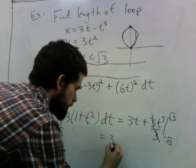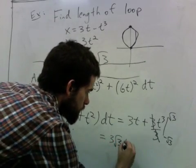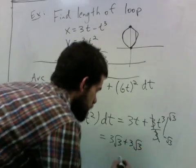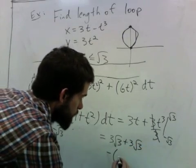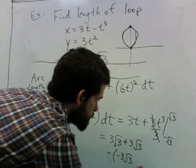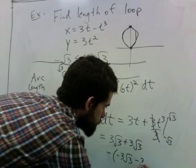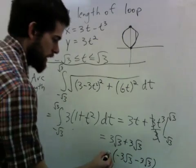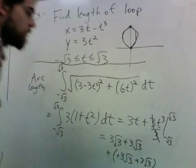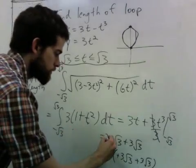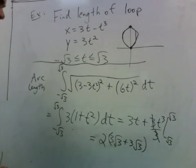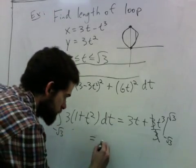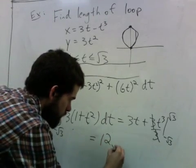Plugging in, we have 3 times square root of 3 for the t term, and the t³ term evaluated at the bounds. Since there's a negative sign all through the lower bound, it's really just two of these values, giving us a final answer of 12√3.